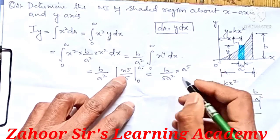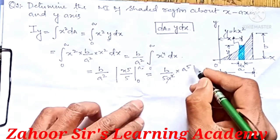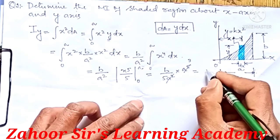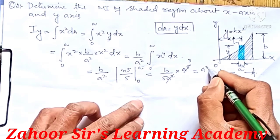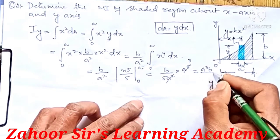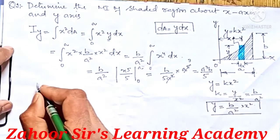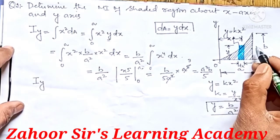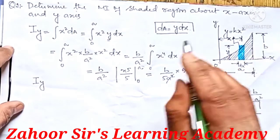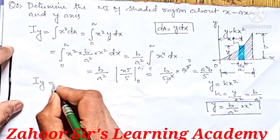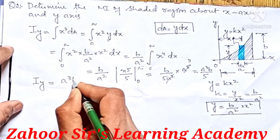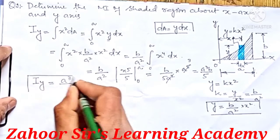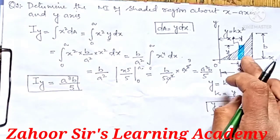Substituting x = a, we get a⁵, and the a² cancels, leaving a³. So the moment of inertia of this region about the y-axis is Iy = a³b/5.